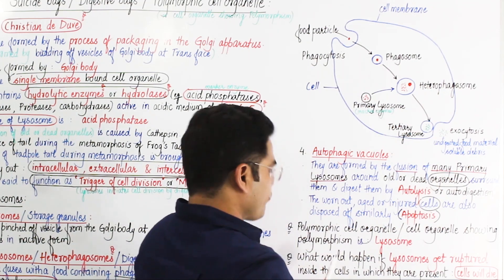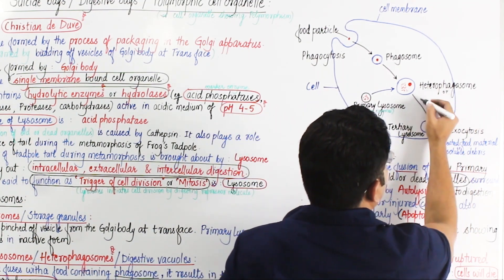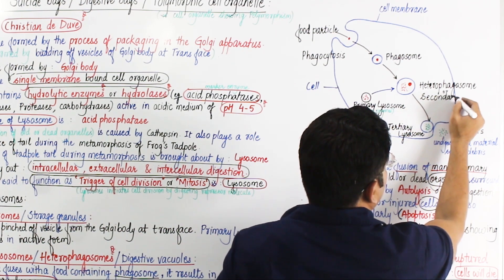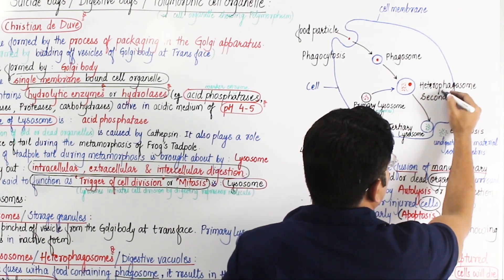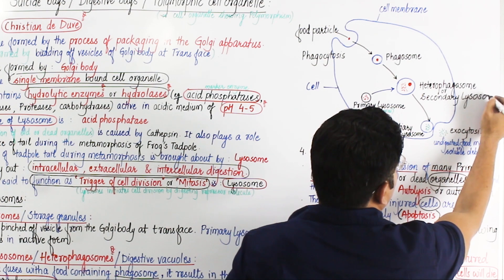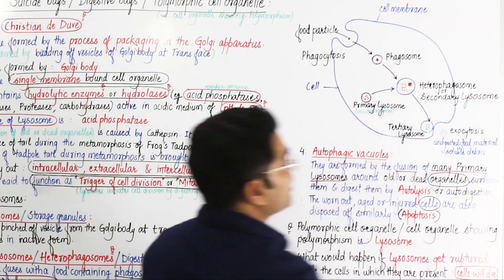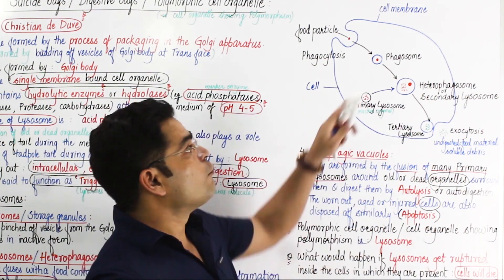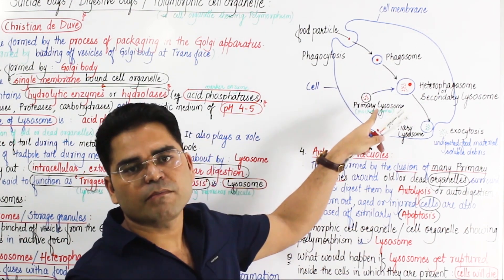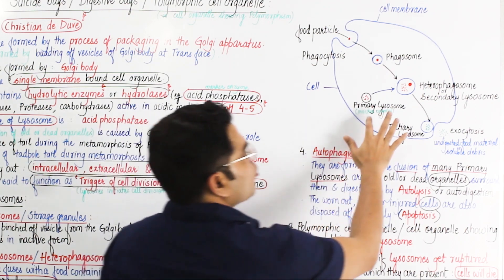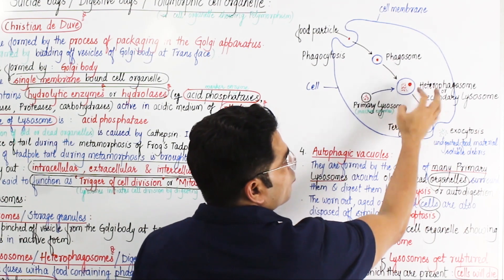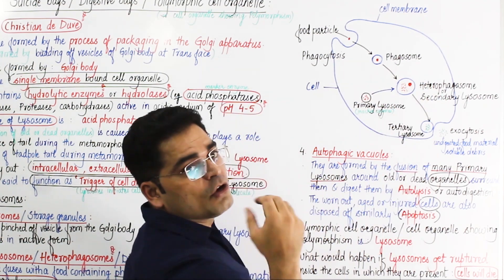The heterophagosome is also known as the secondary lysosome. When the phagosome (food-containing agosome) fuses with the primary lysosome, the enzymes change from inactive to active form. This active secondary lysosome then digests the food material inside it.